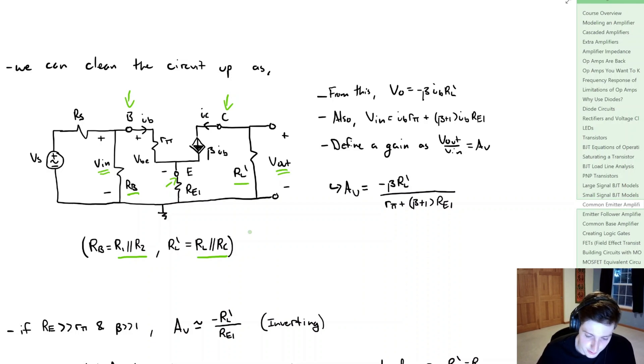So notice here if we're trying to find our output voltage, Vout, well this current beta IB, that's going to be equal to the same current that goes through RL'. Now because of the polarity here, what we can say is that the output voltage is equal to minus beta times IB times RL'.